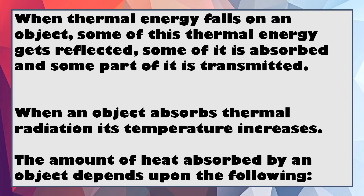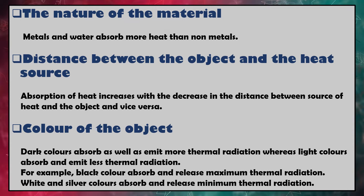The amount of heat absorbed by an object depends upon several factors. First, it depends upon the nature of the material — metals and water absorb more heat than non-metals. It also depends upon the distance between the object and the heat source: absorption of heat increases with the decrease in distance between the source of heat and the object, and vice versa.